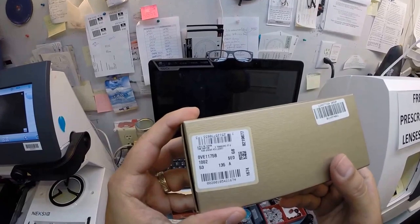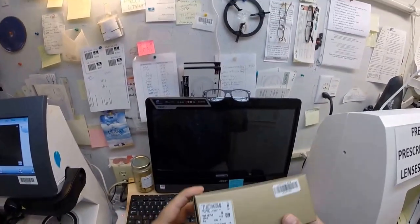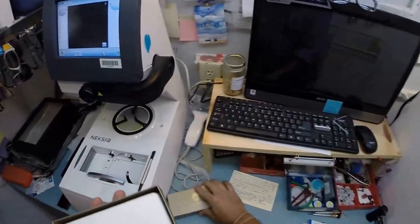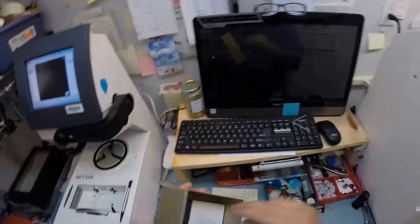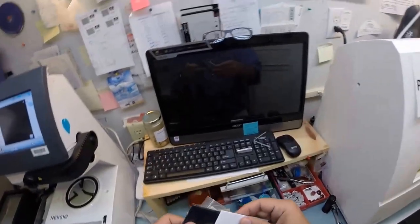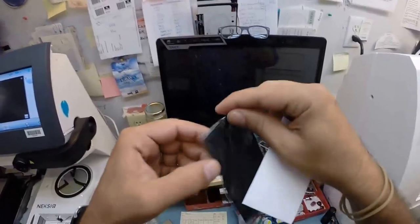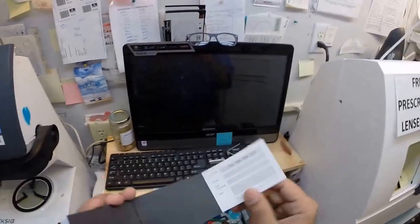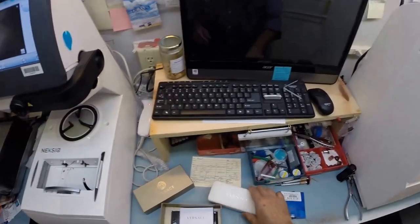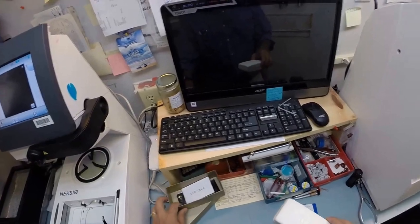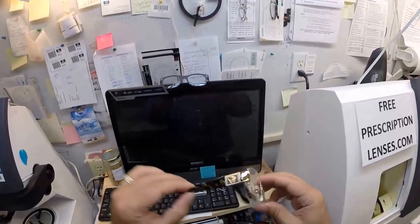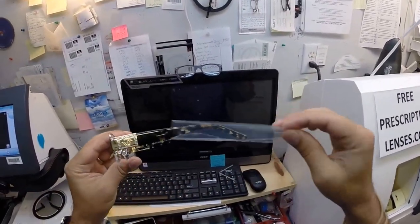In fact, let's turn it over. It is the 1175 color 1002 in the 53 eye size. Let's go ahead and take everything out. This is the box that it comes in.